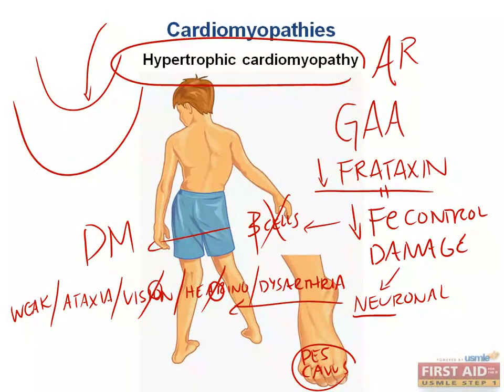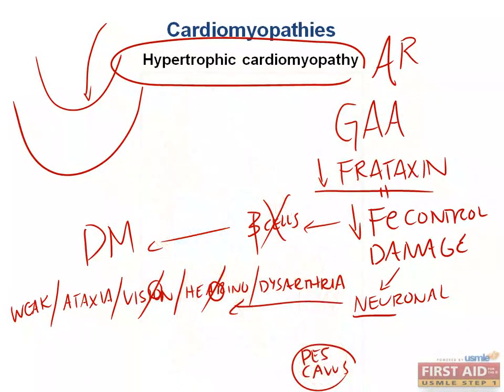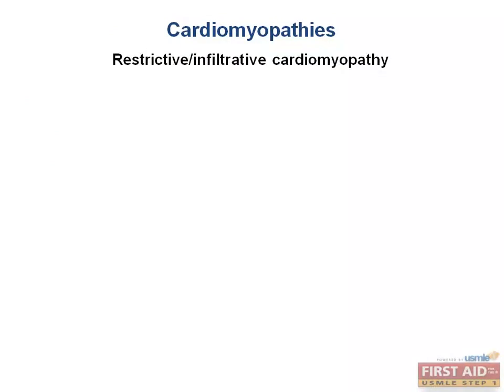Moving to the last cardiomyopathy: restrictive cardiomyopathy. The name gives a strong hint — there is some infiltration of the myocardium that restricts its ability to expand to receive adequate preload volume. There is no problem with contractility, but ventricular compliance is low due to an infiltrative process and/or fibrosis, causing diastolic dysfunction. The ventricle is restricted from appropriately functioning as a dilating diastolic chamber to receive blood.